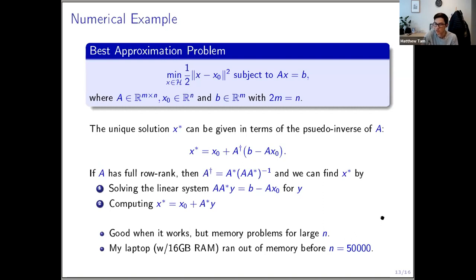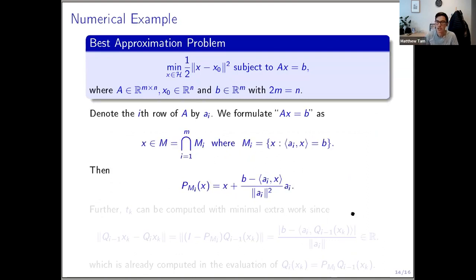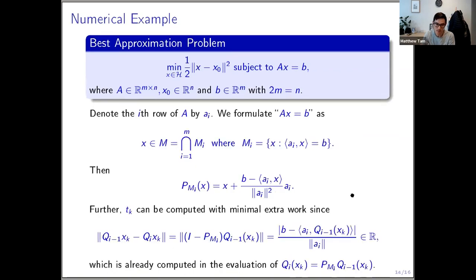Alternatively, I can rewrite the problem by taking the rows of matrix A to define hyperplane constraints. The projection onto each such hyperplane M_i has a known formula, and it turns out the terms appearing in the expression for t_k are just related to the scalar coefficient already computed in the projection step. So you don't have to compute anything extra — that coefficient is a real number you've already computed along the way, and you use it directly in the acceleration.